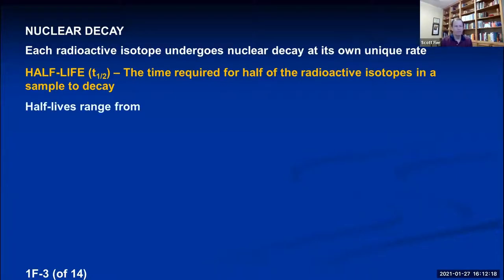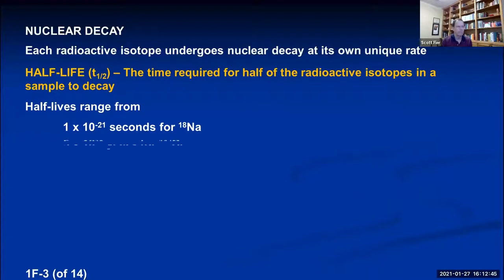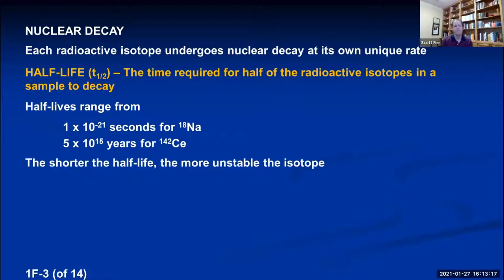There's actually a big range of half-lives. The shortest half-life found is for sodium-18, which has a half-life of 1×10⁻²¹ seconds — so unstable it doesn't last a billionth of a billionth of a billionth of a second. Some have very long half-lives: cerium-142 has a half-life of 5×10¹⁵ years — about five quadrillion years, thousands of times larger than the age of the universe. The shorter the half-life, the more unstable the isotope; the longer the half-life, the closer it is to being stable.